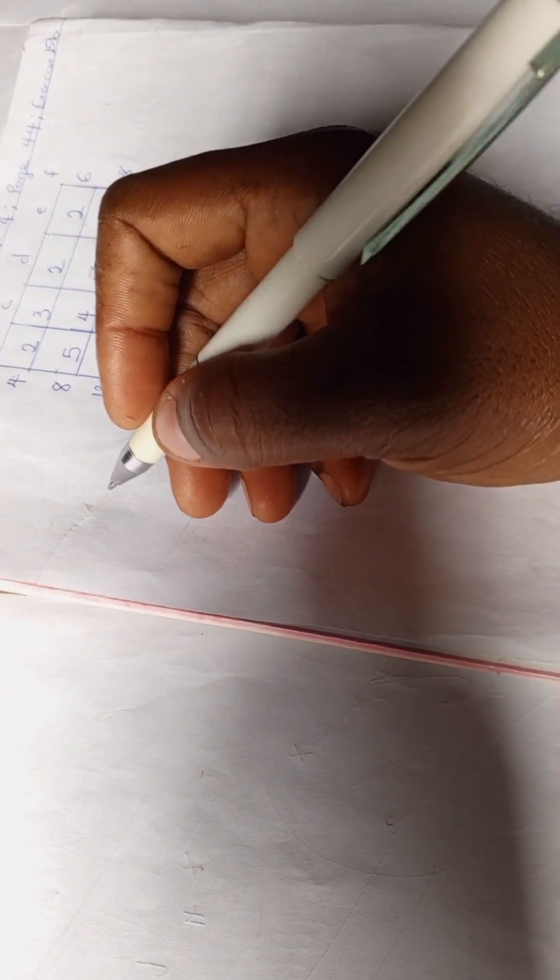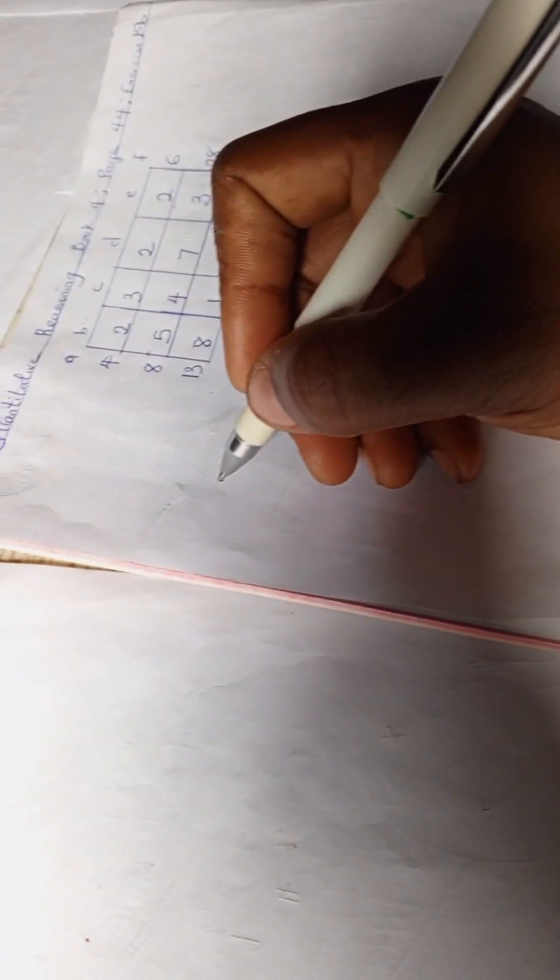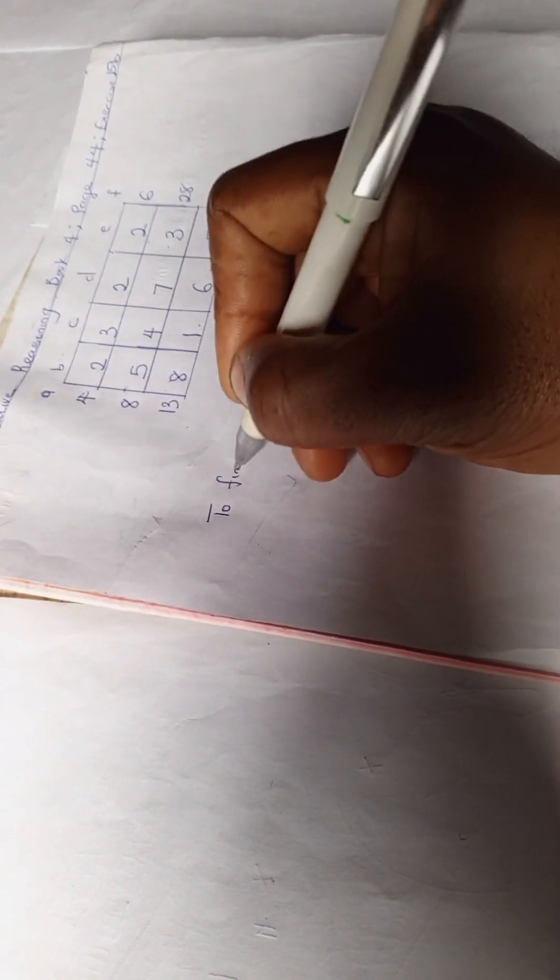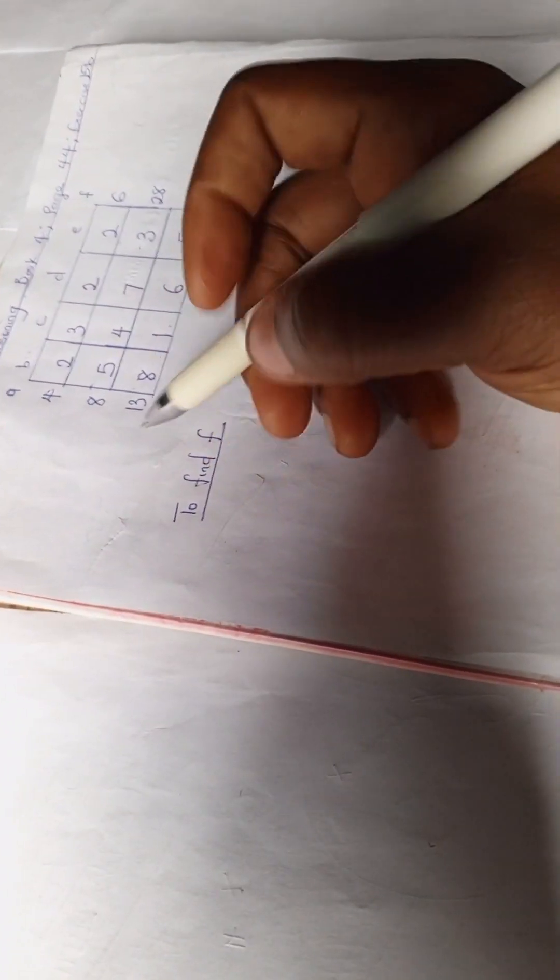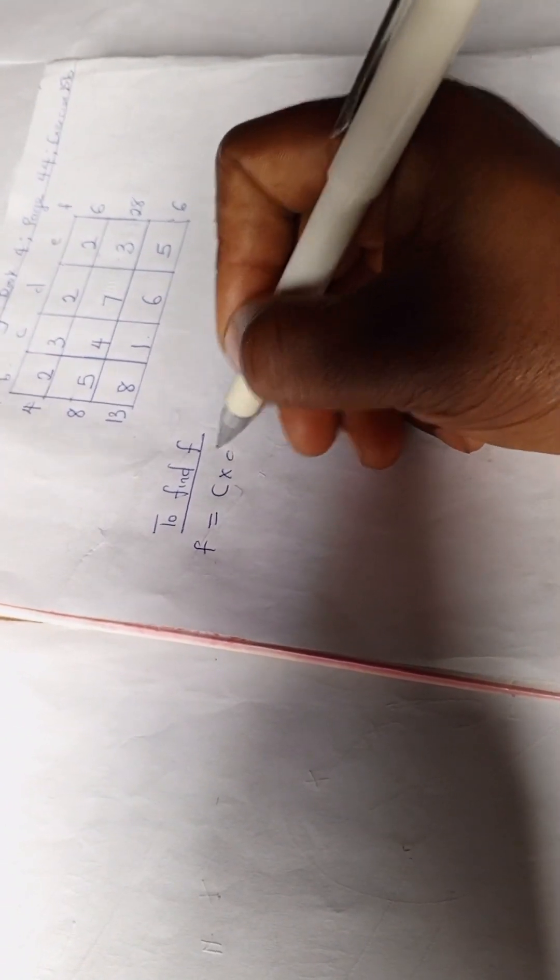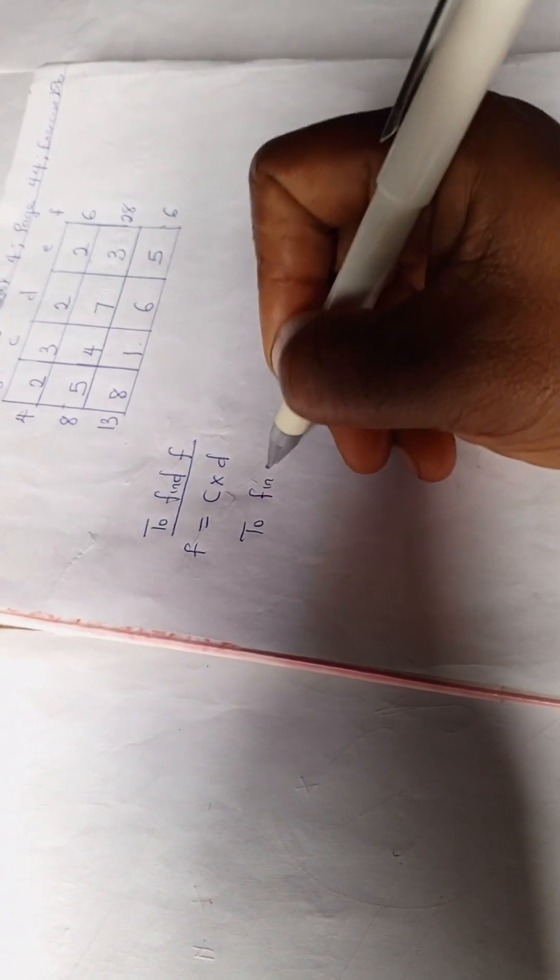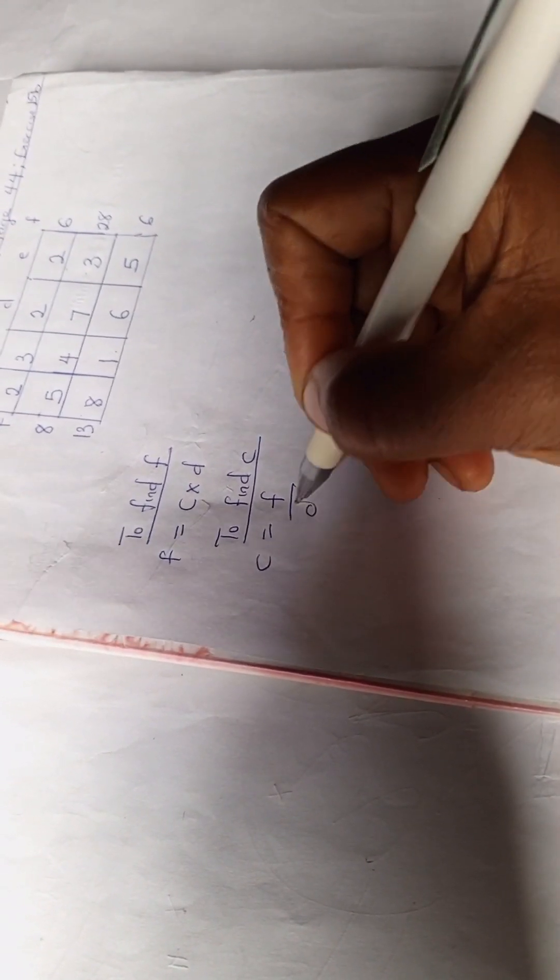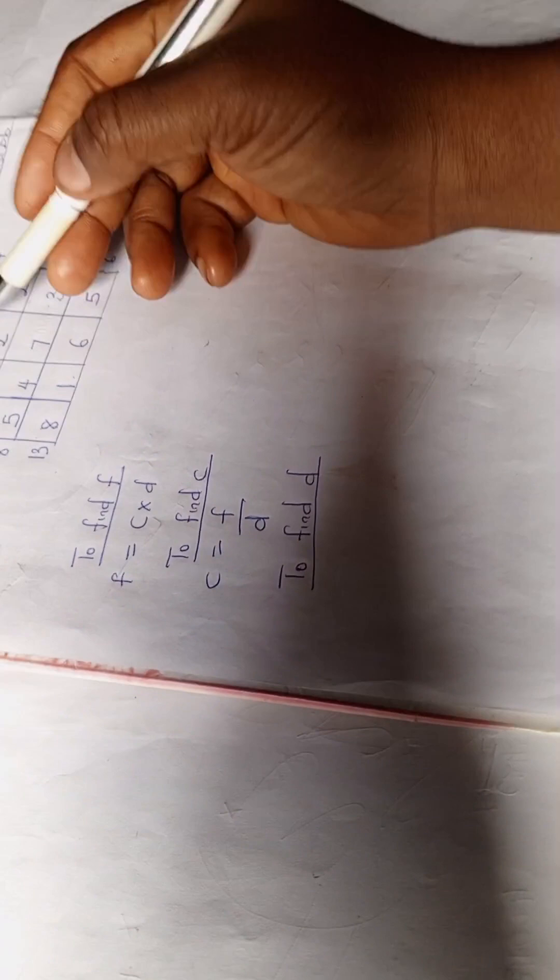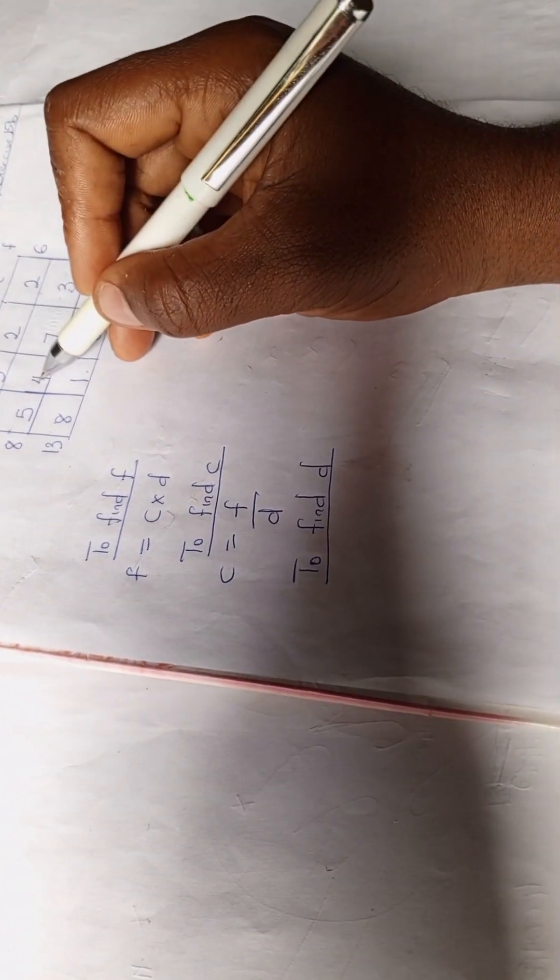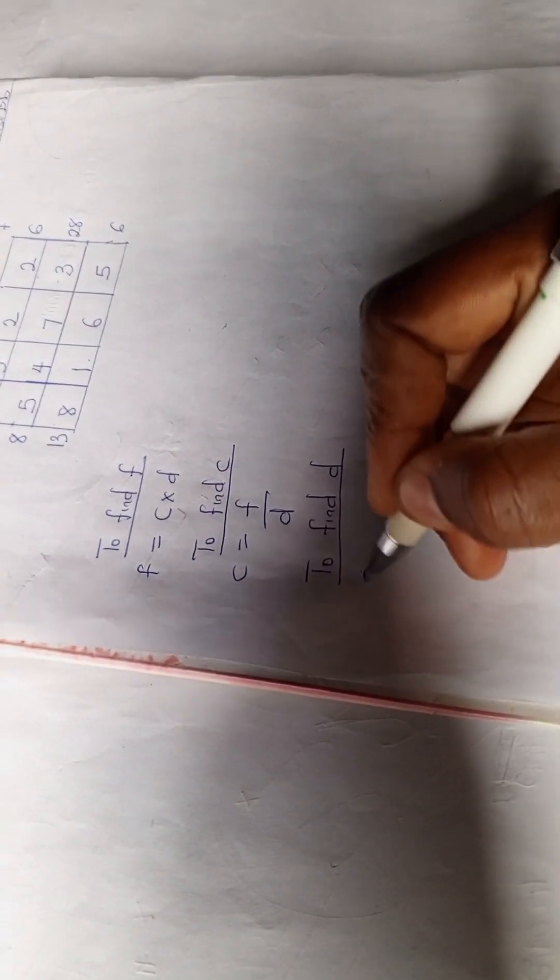To find our F, let's do it this way. To find our F, we're going to say F equals C times D. And likewise, to find C, we're going to say C equals F divided by D. And to find D, remember this is D, we're going to say F divided by C. So to find our D, we have our F divided by our C.